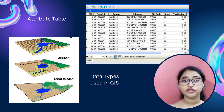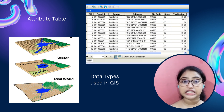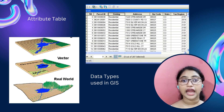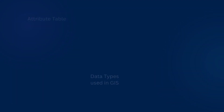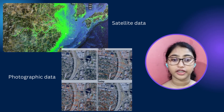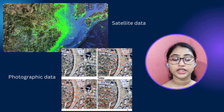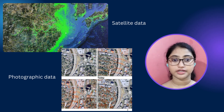GIS can store, manage, analyze and display data in a database using an attribute table which contains each and every piece of information of each and every feature. GIS also uses photographic or satellite data to capture and interpret the Earth's surface features.